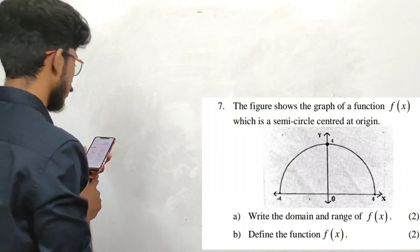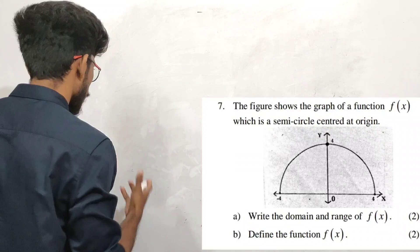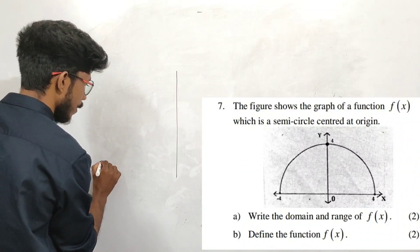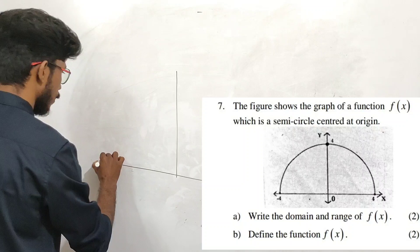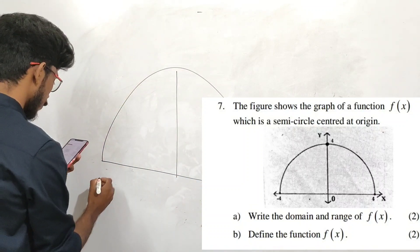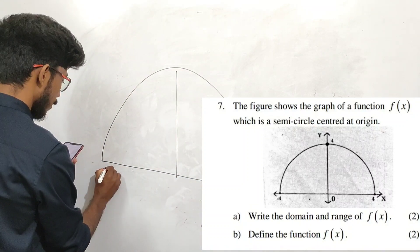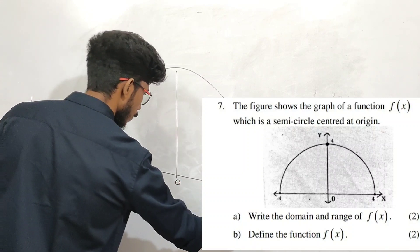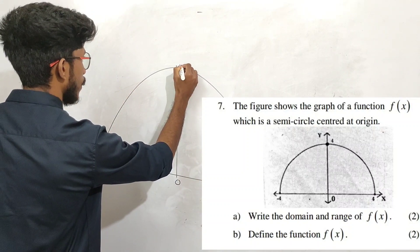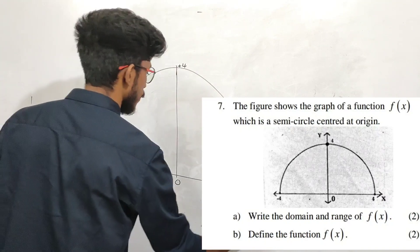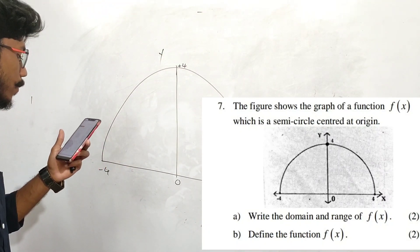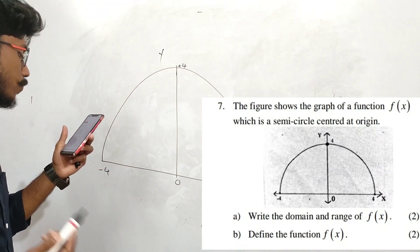If you have a figure, it is very simple. I will ask you about the question in the semi-circle figure. There are points: minus 4, 0, plus 4. This is x, y, x.